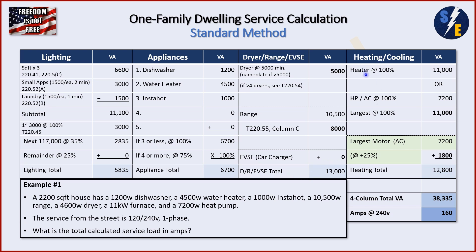Last column: we take our heater at 100% — that's an 11 kW furnace, so 11,000. Then we have a 7,200-watt heat pump. We compare the two; the furnace is larger, so we have 11,000. We take the largest motor of the building, which in this case is the AC compressor motor. 25% of 7,200 is 1,800. Add 1,800 to 11,000 and we get 12,800 for our heating total. Now we total up all four columns and come up with 38,335 VA, divide by 240 volts, and that gives us 160 amps.